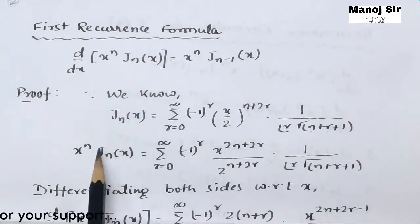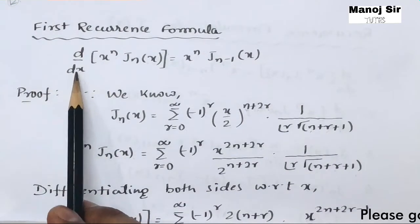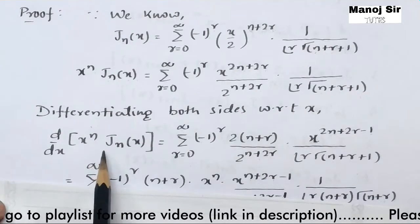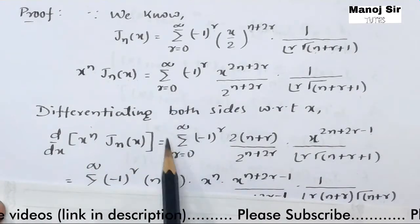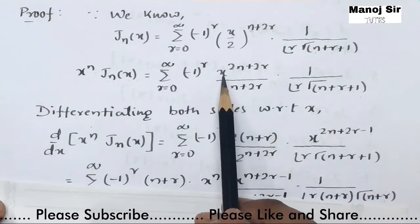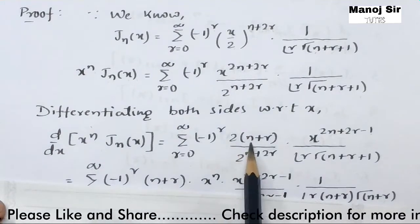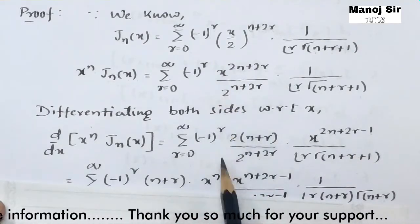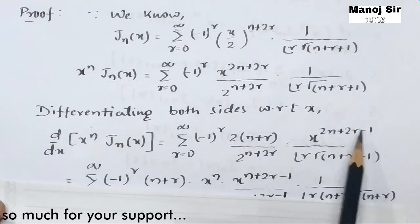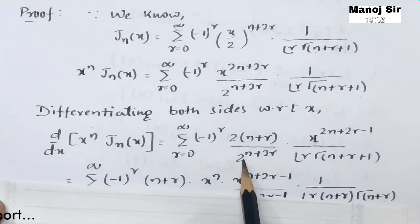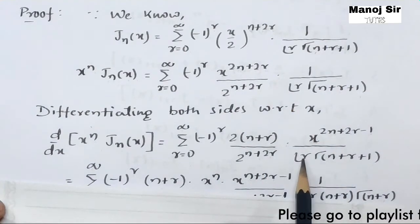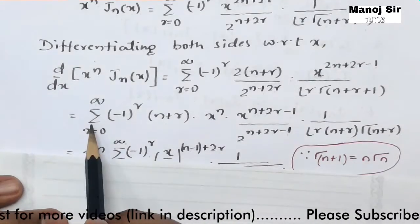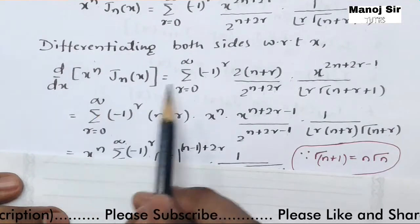Now differentiating both sides with respect to x: d/dx of [x^n times J_n(x)] equals summation r=0 to infinity of (-1)^r. Differentiating x^{2n+2r} gives 2(n+r) times x^{2n+2r-1}. The denominator 2^{n+2r} and r! times Gamma(n+r+1) remain as is.